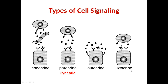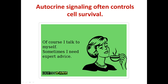The next level of signaling is juxtacrine. In this case, two cells are in direct contact — the signal is attached to one cell and the receptor is attached to another cell, so the signal does not diffuse at all. Autocrine signaling is when a cell signals to itself.